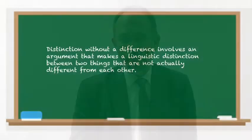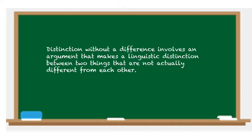Our next fallacy is called distinction without a difference. It falls into the category of fallacies of clarity because it really has to do with the sense of words and what you're emphasizing. Distinction without a difference involves an argument that makes a linguistic distinction between two things that are not actually different from each other. It's a word distinction when, in fact, the things are not really different.